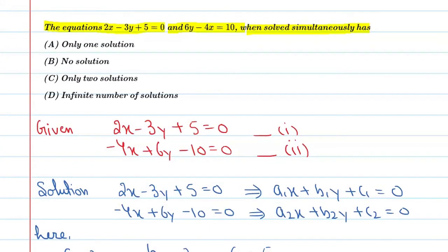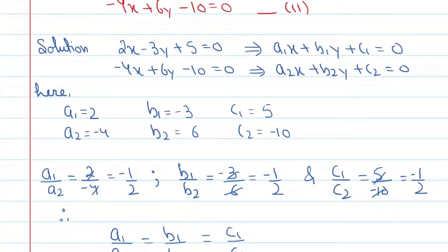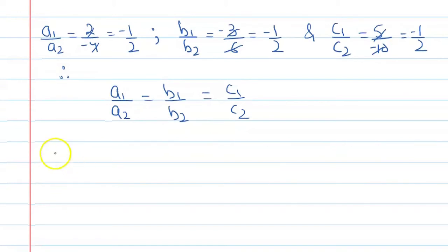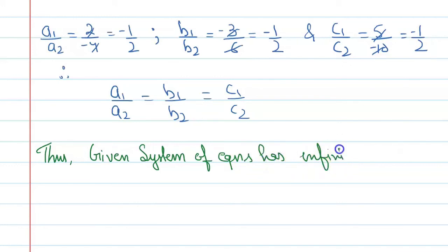So you can see d is the correct option. This is the infinite many solutions. Therefore, the given system of equations has infinite many solutions, and the correct option is d.